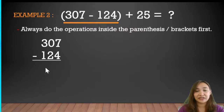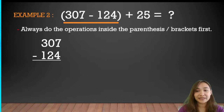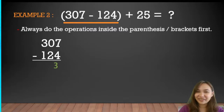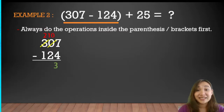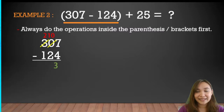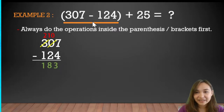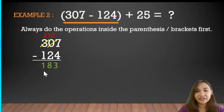Subtracting: 7 minus 4 equals 3. Then 0 minus 2 — we cannot, so we borrow from the hundreds. The 3 becomes 2 and the 0 becomes 10. So 10 minus 2 equals 8. Then 2 minus 1 equals 1. Therefore 307 minus 124 equals 183.